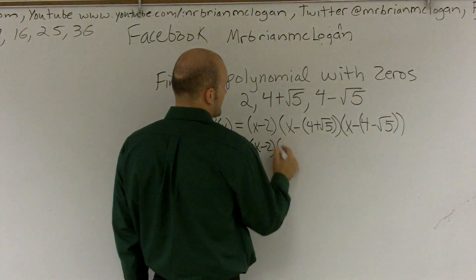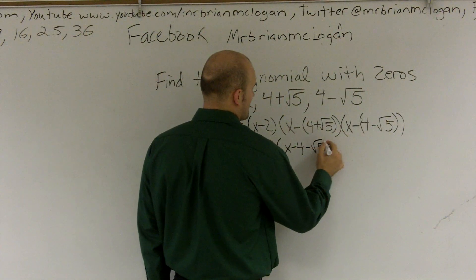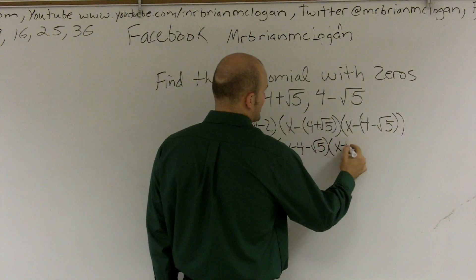So I do x minus 2, and let's do distributive property with this. So it's x minus 4 minus square root of 5, x minus 4.